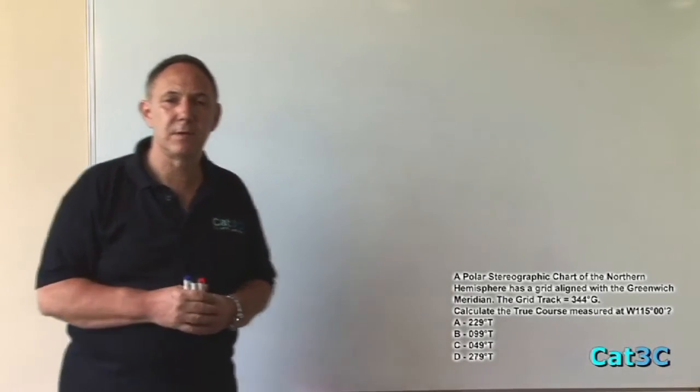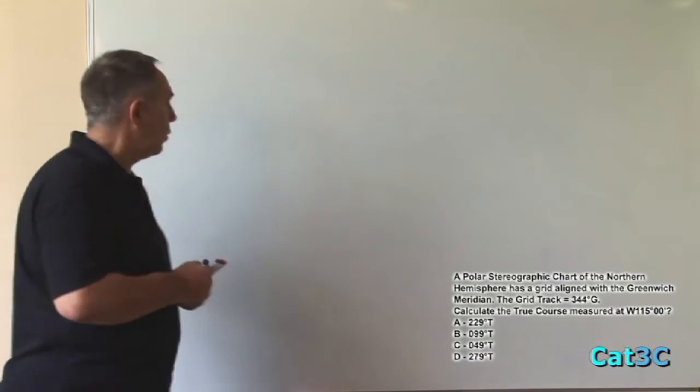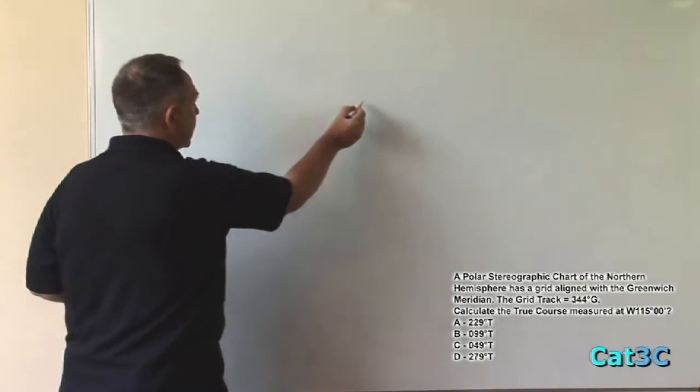Again, the easiest way of doing this is to start off with a very simple diagram. And with all polar stereographic diagrams, we start with a circle.